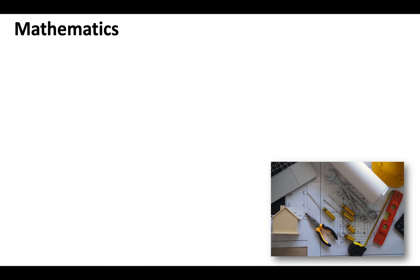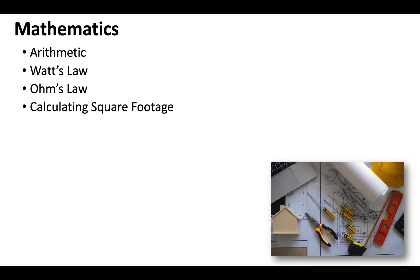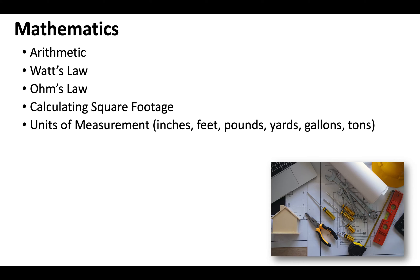When it comes to the mathematics for your General B license, make sure that you're tight with your arithmetic — addition, subtraction, multiplication, and division. Be familiar with Watts' law and Ohm's law for the electrical-related questions. Know how to calculate square footage and your different units of measurement. Job costing and estimation will always draw from percentages and decimals, so make sure that you have these core math skills in place.